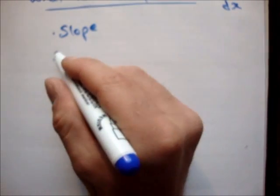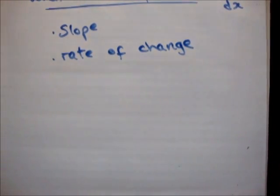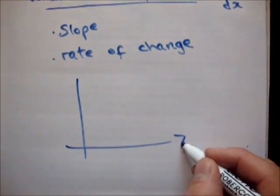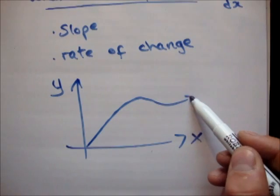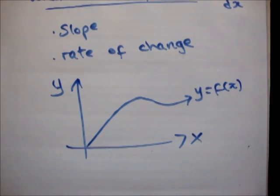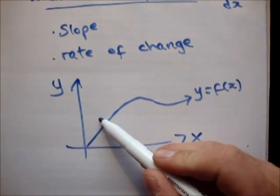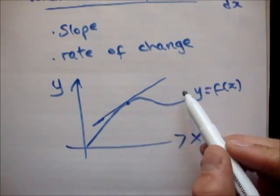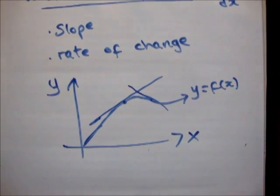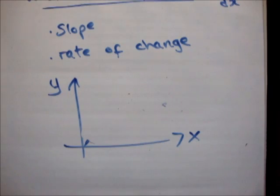What does differential mean? A differential gives you a slope or a rate of change. What's a slope? Let's draw a quick xy-plane. Say I have a function — that's y equal to a function of x. A slope is how quickly it's changing, and you get a slope by having a tangent. The slope would be the slope of your tangent line, so by computing the derivative you will get the slope.